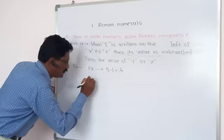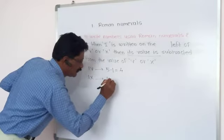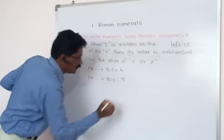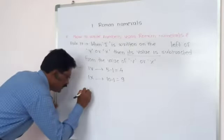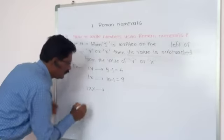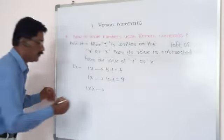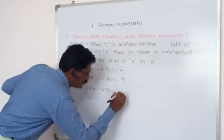In the same way, suppose IX. X means 10, so IX means 10 minus 1, which is equal to 9. Suppose XIX, here it means 19, which is 20 minus 1, equal to 19.